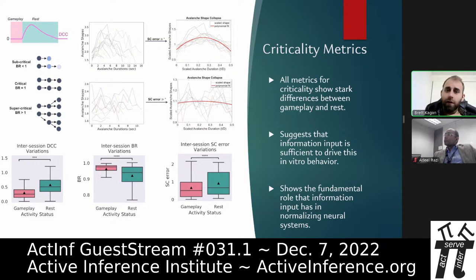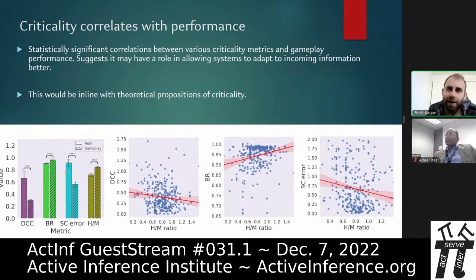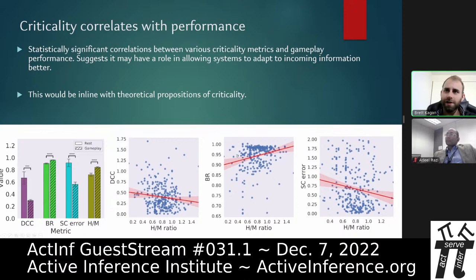This shows criticality is a very fundamental property and that information input drives it strongly. There were also statistically significant correlations between the different measures of criticality and gameplay performance — cultures that showed higher degrees of criticality across all three markers also had better hit-miss ratios. Although this arises in a simple system with simple input, there is clearly some link between processing information and criticality.